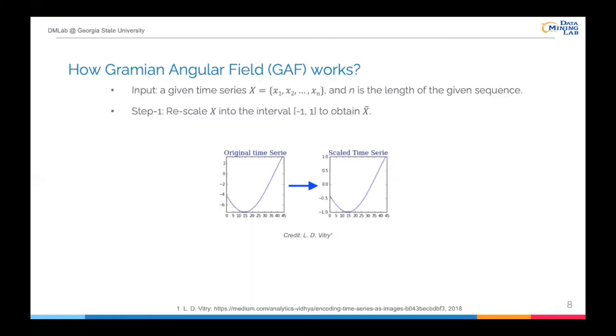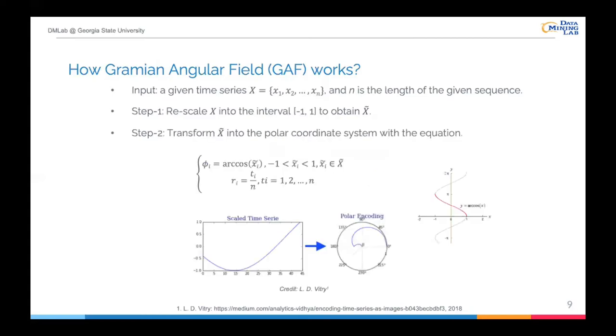So how does the Gramian Angular Field work? Let's look at the processing pipeline of the GAF algorithm. Suppose a given input X is a time series with n time steps. Typically, the first step of the GAF algorithm is to rescale x into a target interval, for example minus 1 to 1, and denoted as x-tilde. In our study, this operation is finished in our preprocessing phase. The second step is to transform the rescaled sequence into the polar coordinate system with provided equations. Since x-tilde belongs to minus 1 to 1, so the phi will belong to 0 to 180 degrees. There are two primary advantages in this transformation. First, the entire encoding process is bijective, as arccosine function is monotonic. Second, the polar coordinate system preserves temporal dependency by using the radial coordinate Ri.